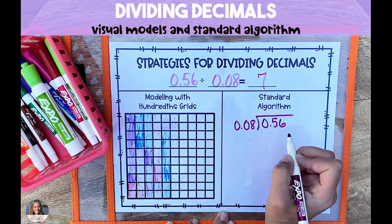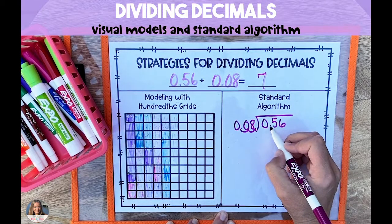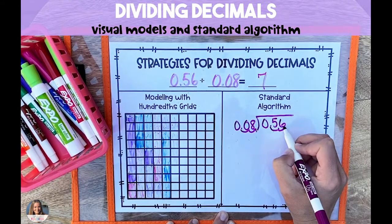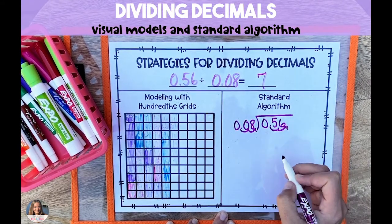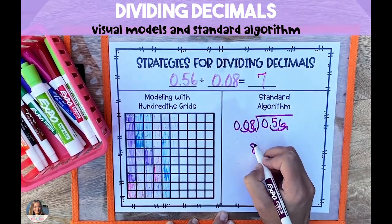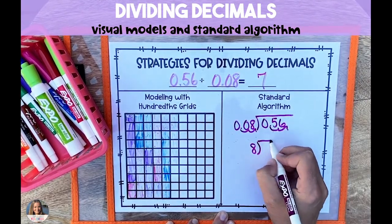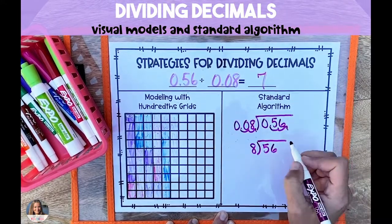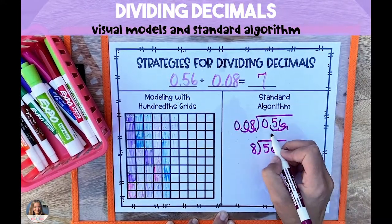In order to make 8 hundredths a whole number, we're going to increase its value a hundred times and then our divisor is worth 8. Our dividend of 56 hundredths is also going to increase a hundred times and will now be worth 56. It's really important to rewrite the division problem after you've increased your dividend and divisor so that you have a clean problem to work with.